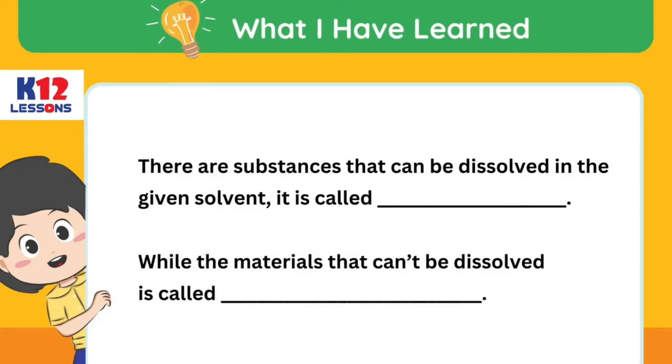There are substances that can be dissolved in the given solvent — it is called blank. While the materials that cannot be dissolved is called blank.